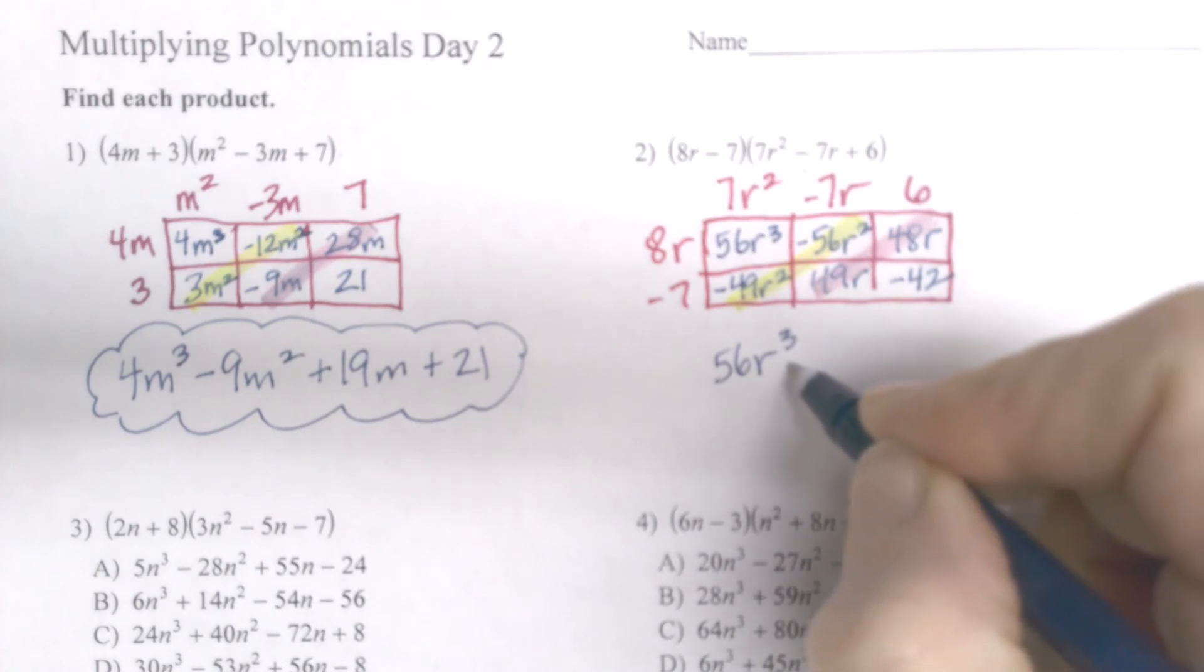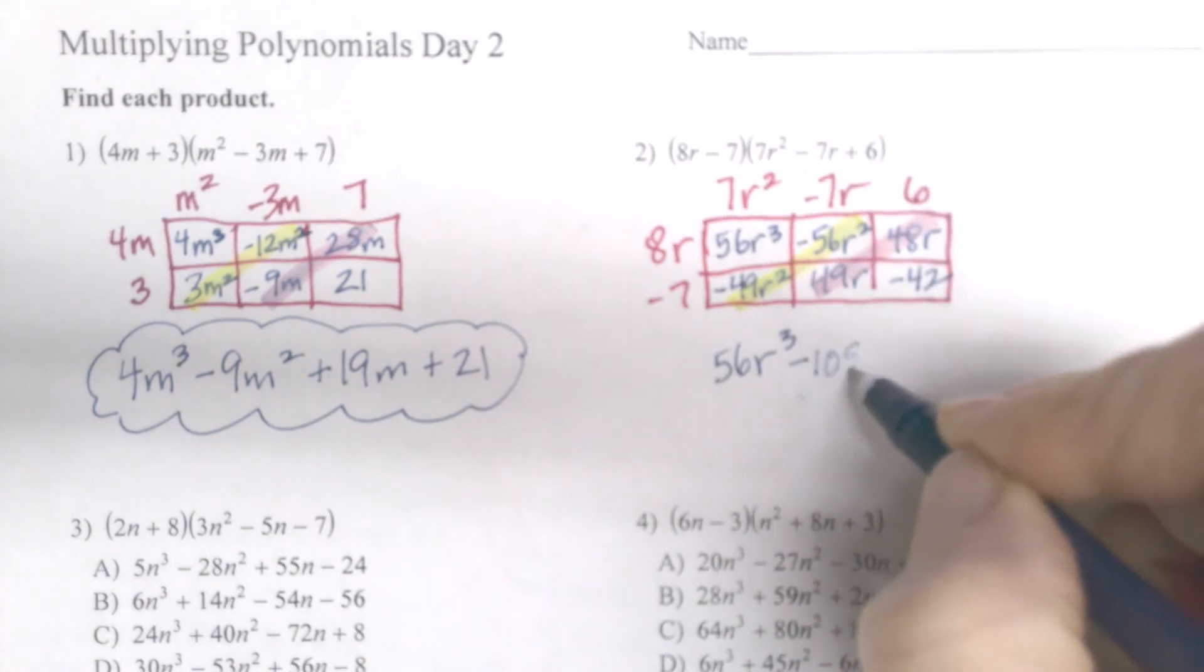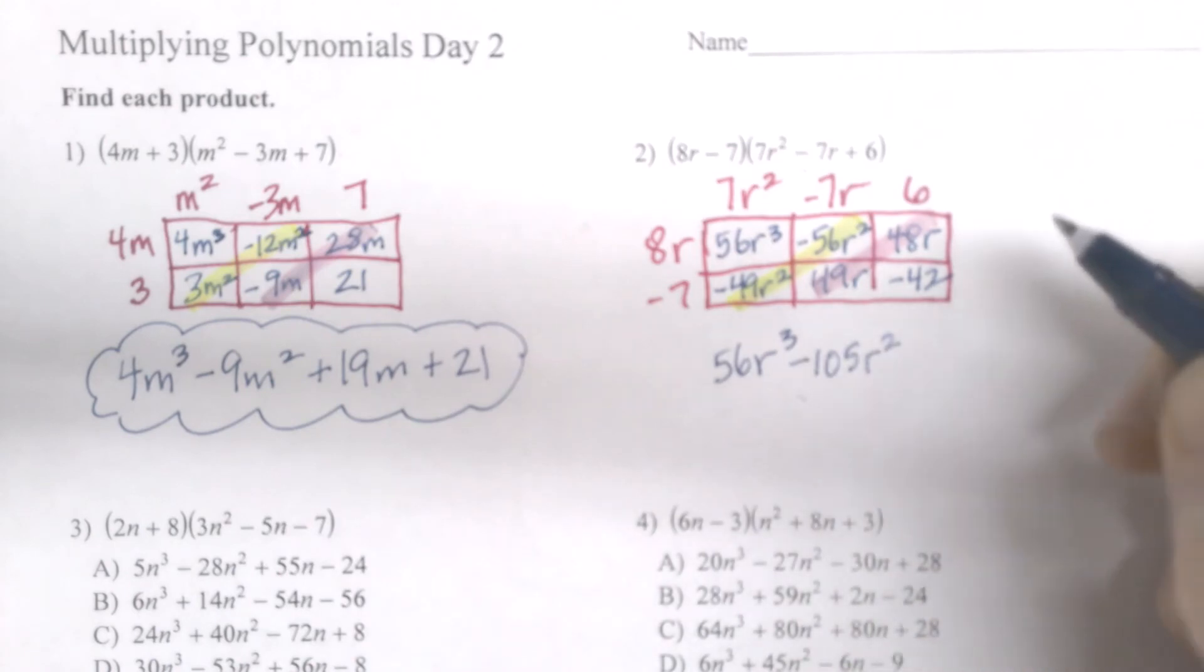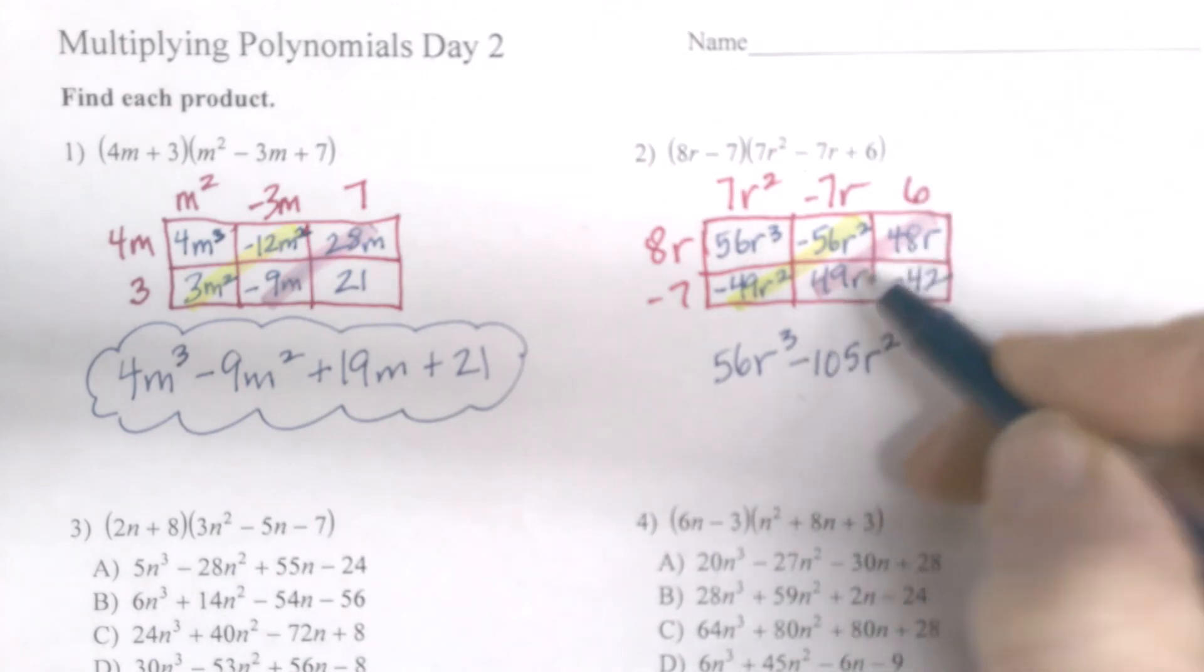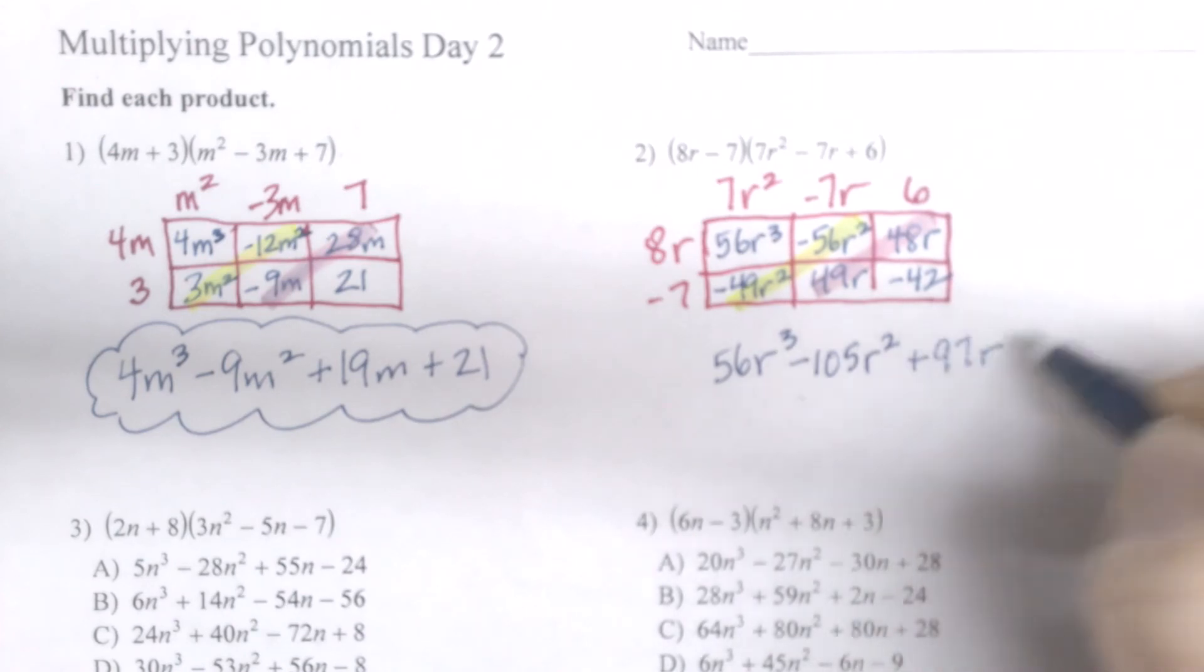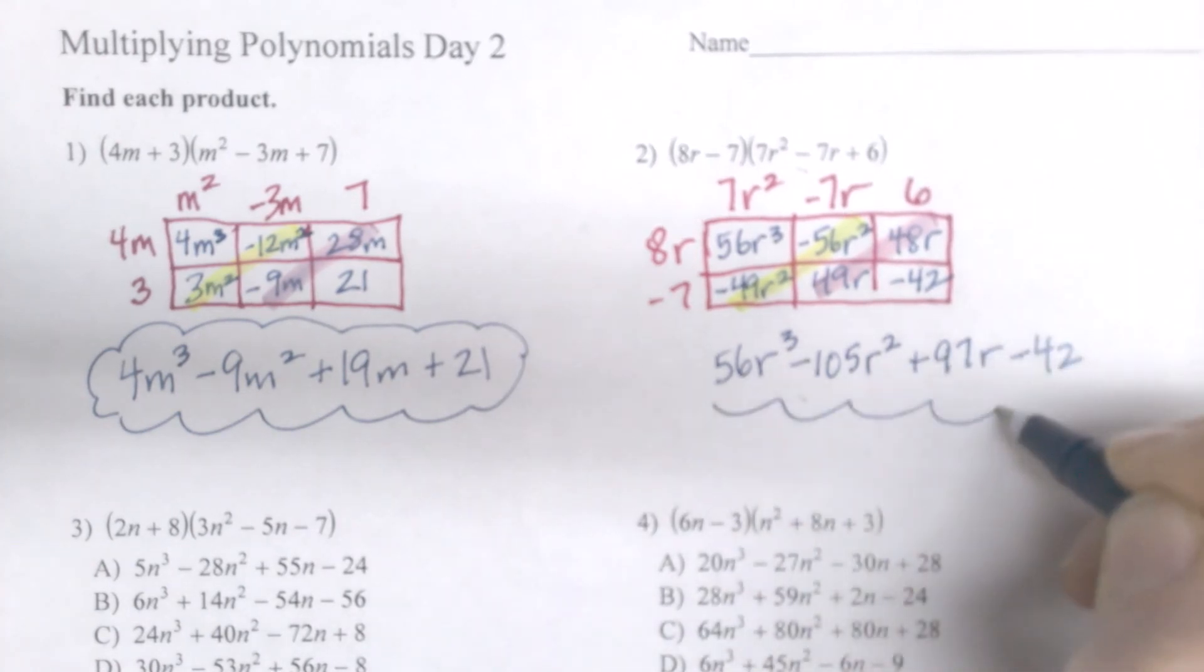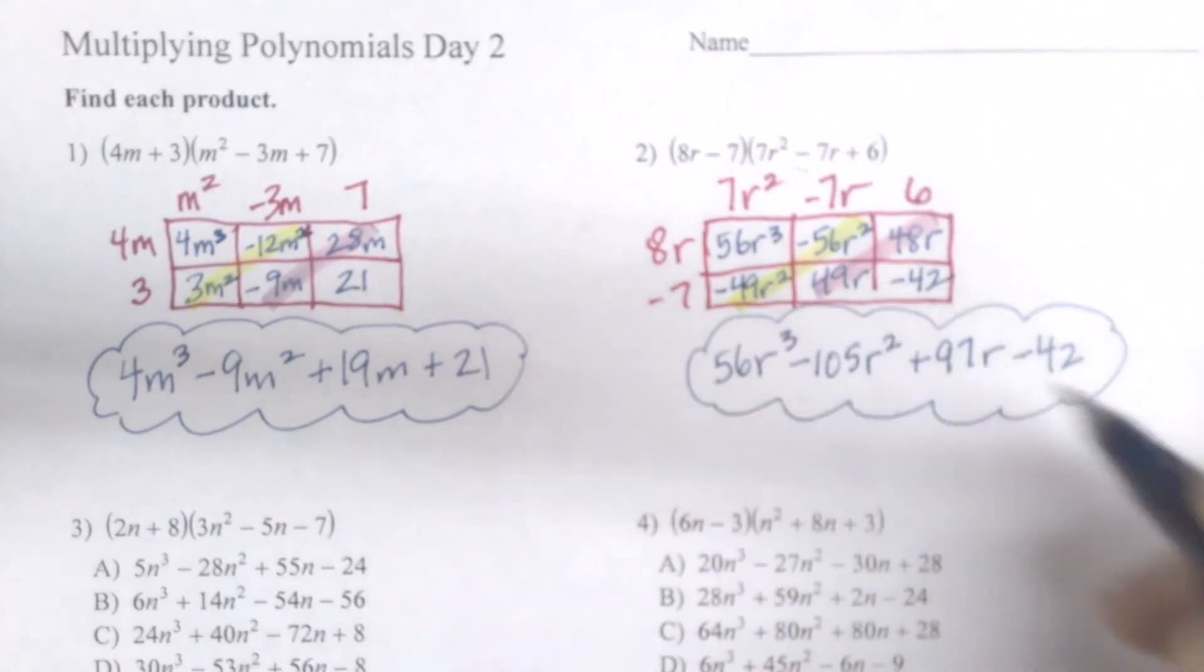Minus, I believe it's 105r squared. Another big one here. Minus, no, plus, sorry. 97r minus 42 would stand alone, and that would be my final answer on that one.